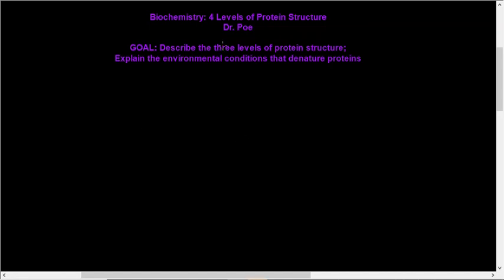Proteins work is never done, so right now we're going to be talking about the four levels of protein structure. Our goal is to describe the four levels of protein structure and explain the environmental conditions that denature proteins. We're going to start with the levels of protein structure and then talk about denaturing.